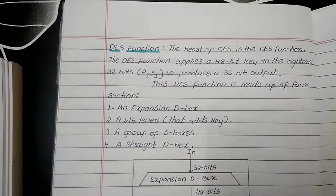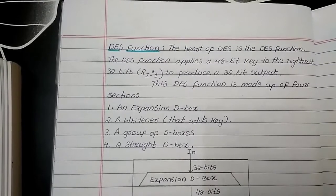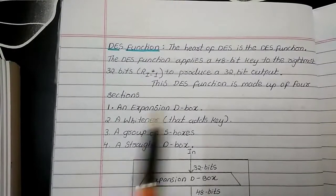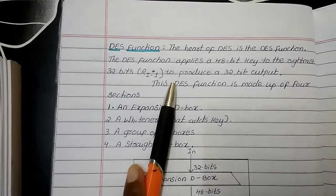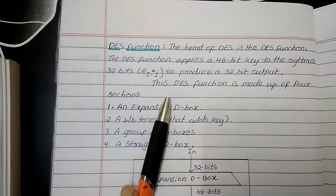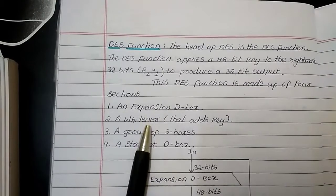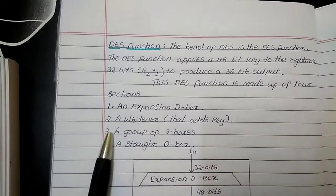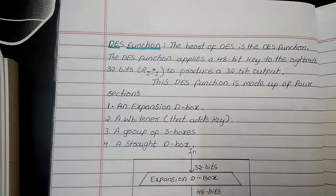The DES function is actually the heart of DES. Here, it is applying 48-bit key to the rightmost 32-bits that is Ri minus 1 to produce a 32-bit output. Basically, the DES function is made up of four sections. First one is expansion D-box. Second one is whitener which is adding the key. Third one is group of S-boxes. And fourth one is a straight D-box.